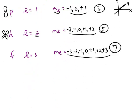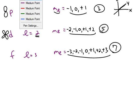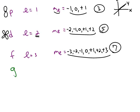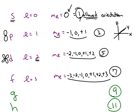If you go up past an f orbital, orbitals then go in alphabetical order. So after f comes g, and for a g orbital the pattern would hold — there would be nine allowed orientations. You can go to an h orbital, and there will be eleven allowed orientations. For the elements on the periodic table, we only have to worry about s, p, d, and f — so we have one, three, five, and seven allowed orientations.